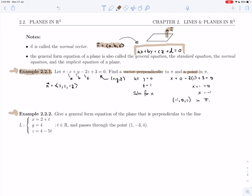All right, example 2.2.2. This time we're asked to give the equation of a plane, and we're given some information. We want the plane to be perpendicular to this given line L, and we want our plane to contain the point 1, minus 3, 4.